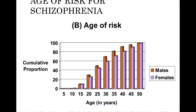A second graph shows the cumulative proportion of age of risk for developing schizophrenia. By age 50, almost anyone who will ever have schizophrenia has already developed the disorder — there are essentially no cases developing after age 50. Only about 10 percent will develop schizophrenia after age 40. The biggest jump in age of risk is happening between ages 15 and 25.